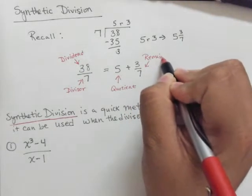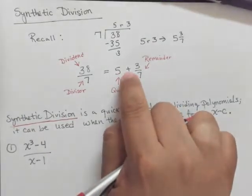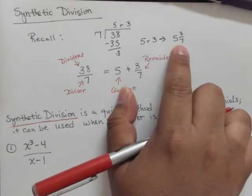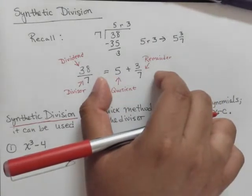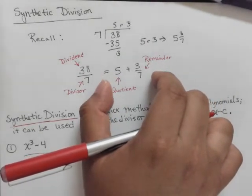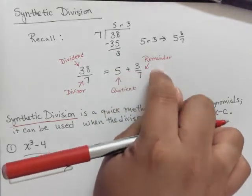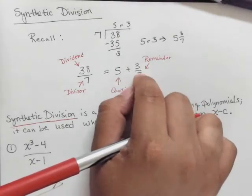So notice, the way that I wrote out the remainder, I put 5, the quotient, plus the 3/7ths. Of course, that's the same here as the 5 and 3/7ths. But I'm writing it this way because we're going to be doing synthetic division, and it's going to be necessary to write the quotient plus the remainder. And the remainder should look like this, a fraction.